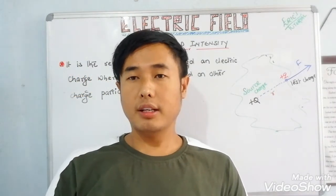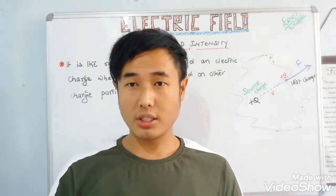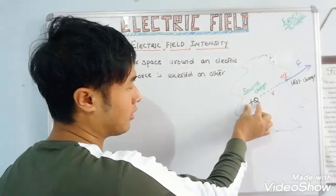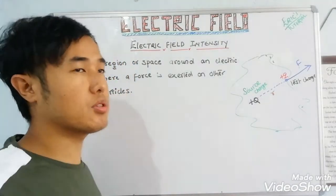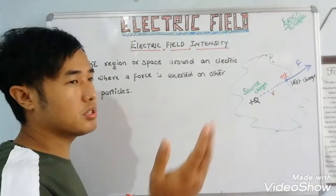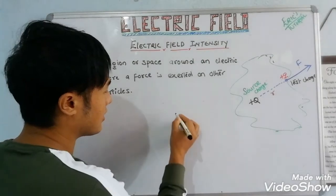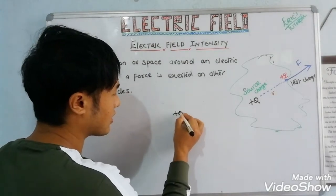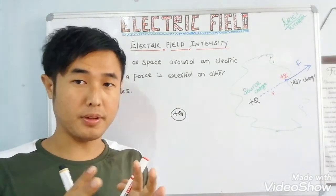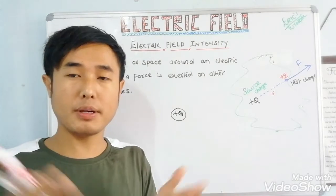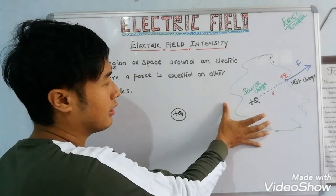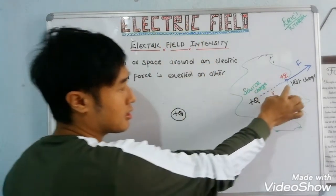Electric field is a vector quantity and has a direction. To understand the direction of electric field, suppose I consider a plus Q source charge. To find the electric field direction at any point, I place a positive test charge at that point.